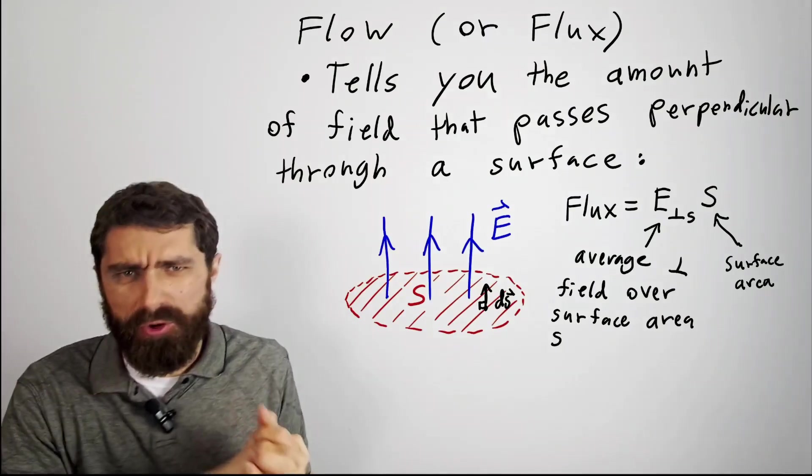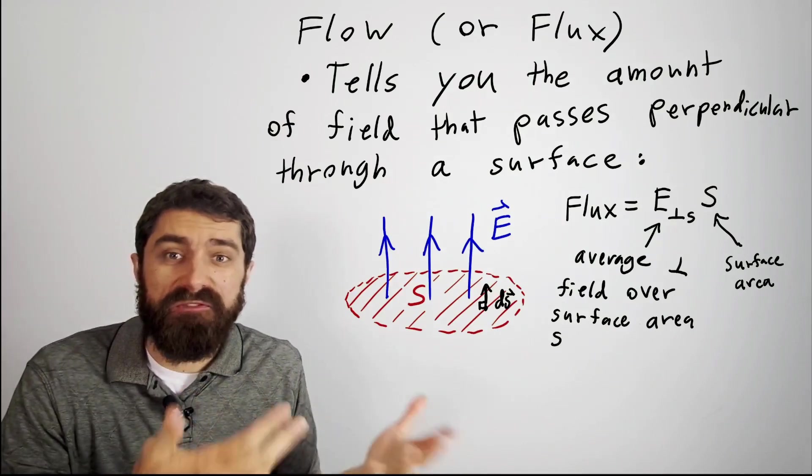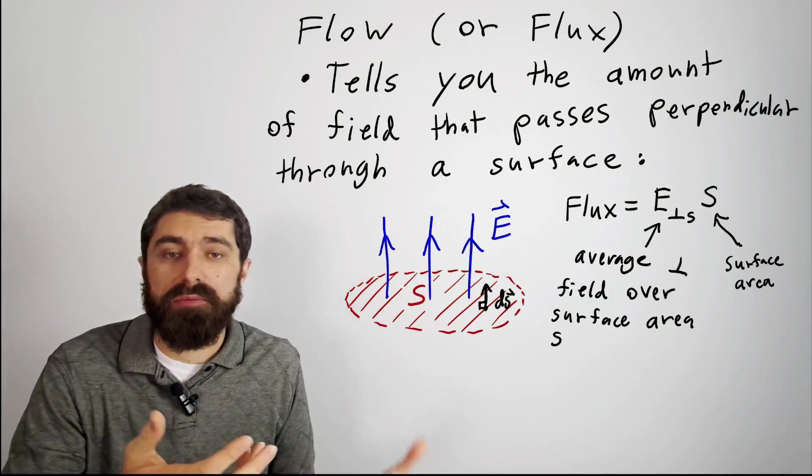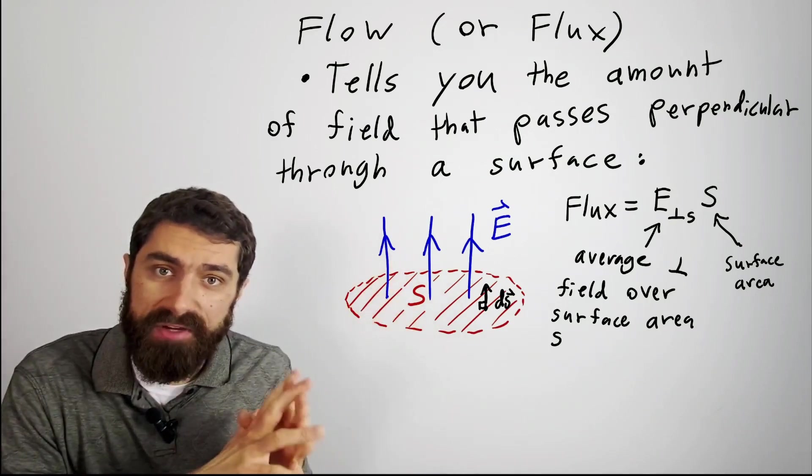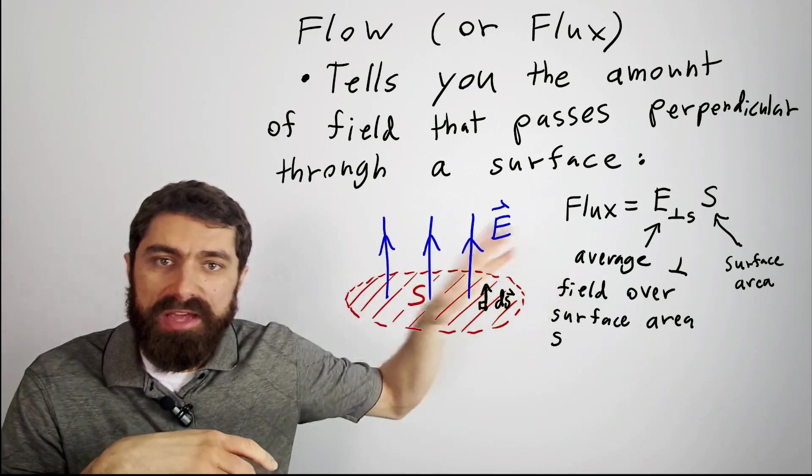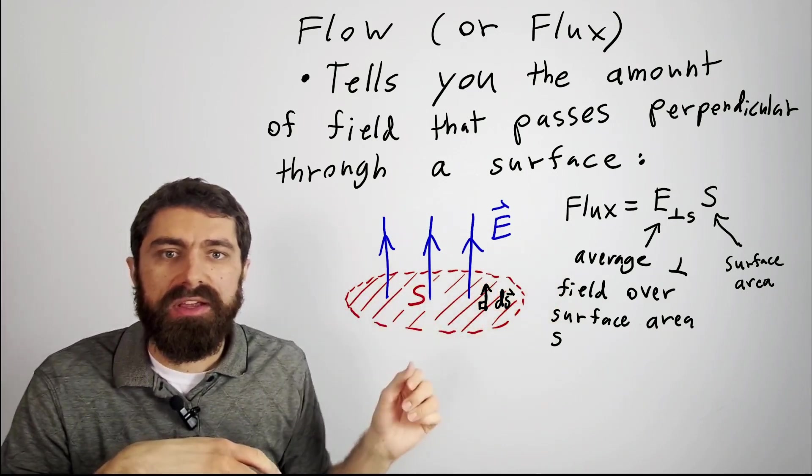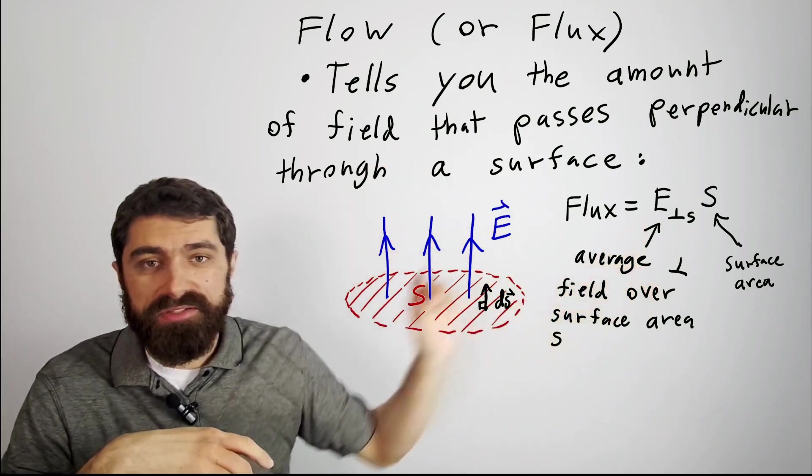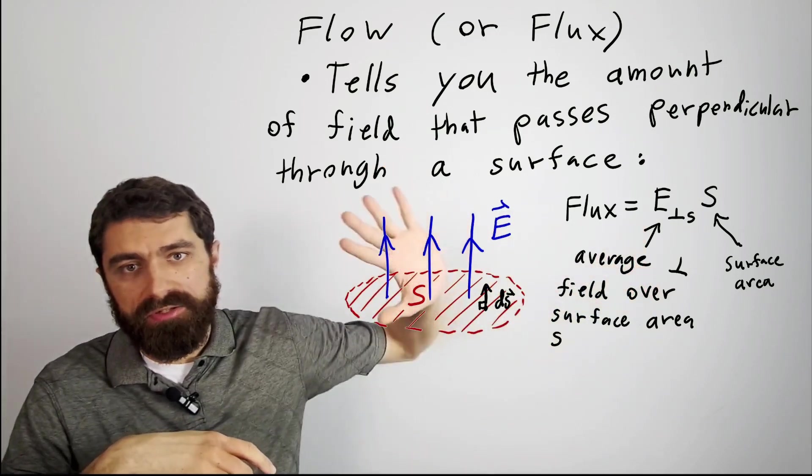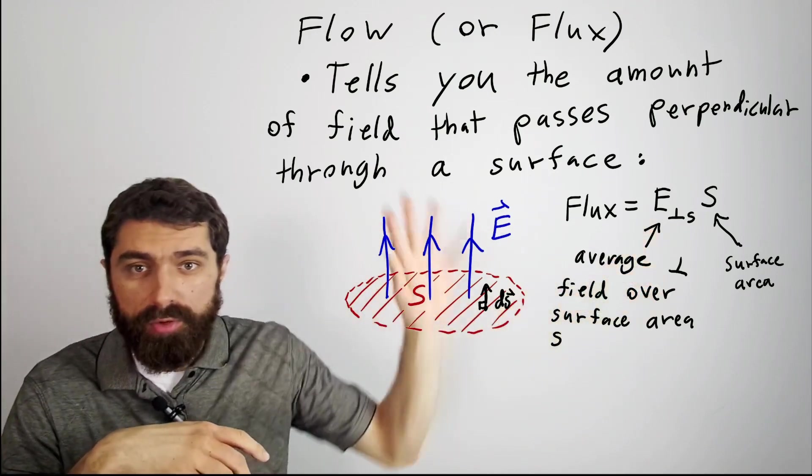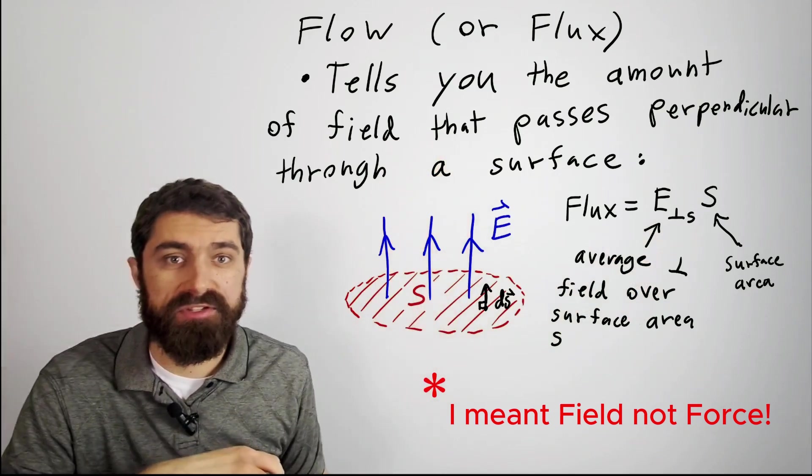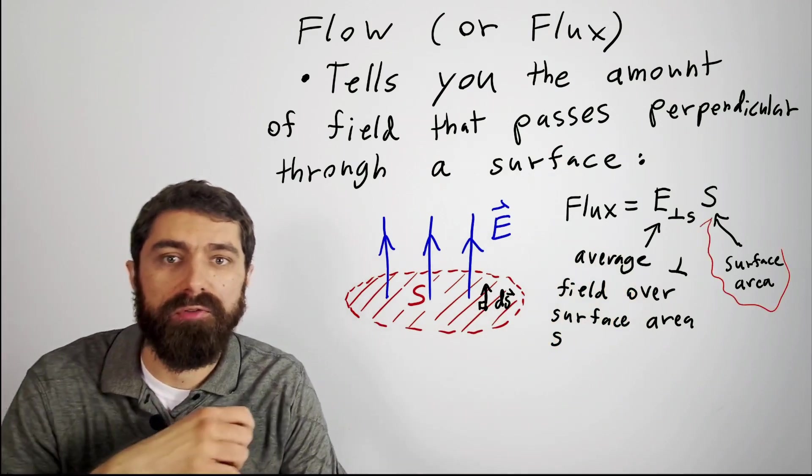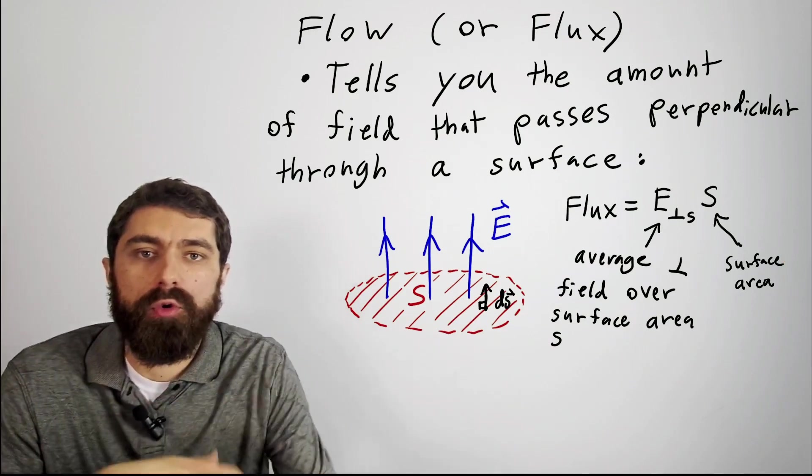So what do I mean by flow? Flow, or more formally known as flux, tells you the amount of vector field that passes perpendicularly through a given surface. For example, let's say you've got a surface S here, almost like a disk, and you've got an electric field passing through perpendicular to the surface. Even if it wasn't perpendicular, even if it was at an angle, you'd take the perpendicular component of the force that's perpendicular to the surface and you'd multiply it times the surface area, and that would give you the flow or the flux.